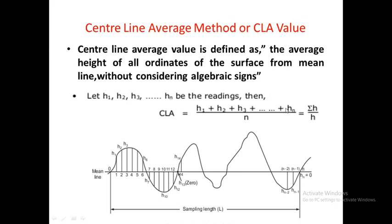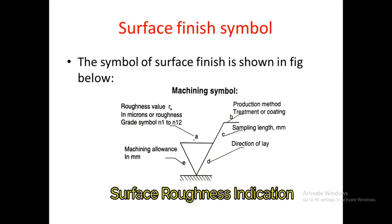After finding all ordinate heights, we add all values H1 + H2 + H3 till HN, and finally find the mean by dividing by the total number of divisions N. This mean value is nothing but the CLA value, which gives the roughness of the surface under study. Now, this is the surface finish symbol, which is used to indicate the surface finish of any surface — it is indicated by a triangle with various letters A, B, C, D, and E.